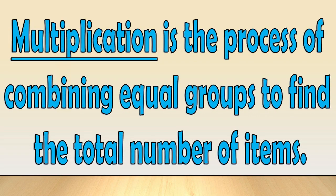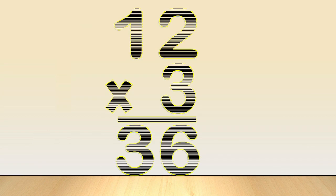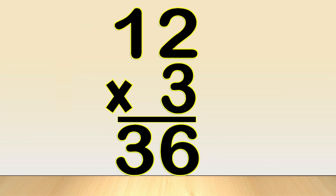Multiplication is the process of combining equal groups to find the total number of items. Let's look at the number sentence: 12 times 3 equals 36.